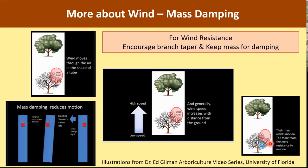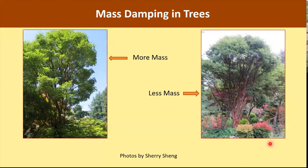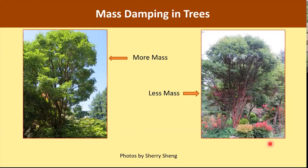What does mass damping mean for pruning? Two trees of the same species — Acer griseum — show the contrast. The one on the left kept lots of leaves and branches throughout the tree, providing more mass for damping compared to the one on the right. The lesson for pruning is: keep lower branches and leaves throughout your tree to improve stability in high wind.